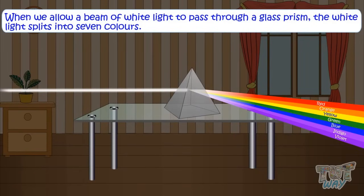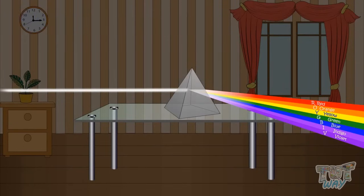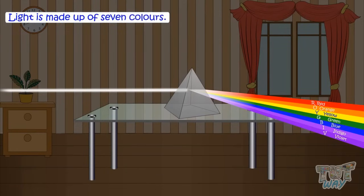The seven colors are violet, indigo, blue, green, yellow, orange, red. In short, you can say VIBGYOR. These are the seven colors that light is made up of.